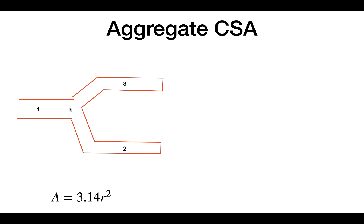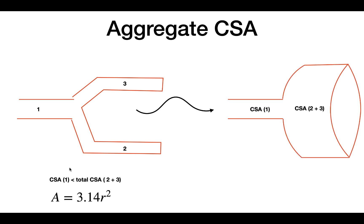But what about the aggregate cross-sectional area? The aggregate cross-sectional area is when you take two individual cross-sectional areas and add them together. So if you take the cross-sectional area of vessel two and add it to vessel three, the total is greater than the individual cross-sectional area of vessel one. The main takeaway is that the greater the amount of branching, the greater the aggregate cross-sectional area.